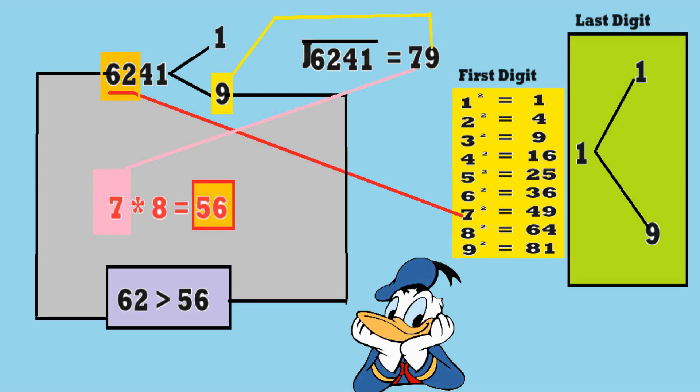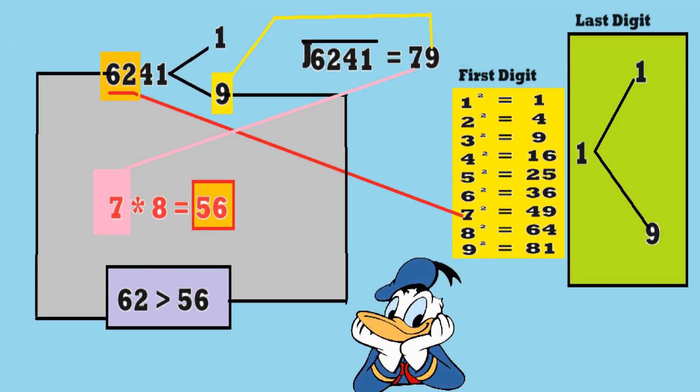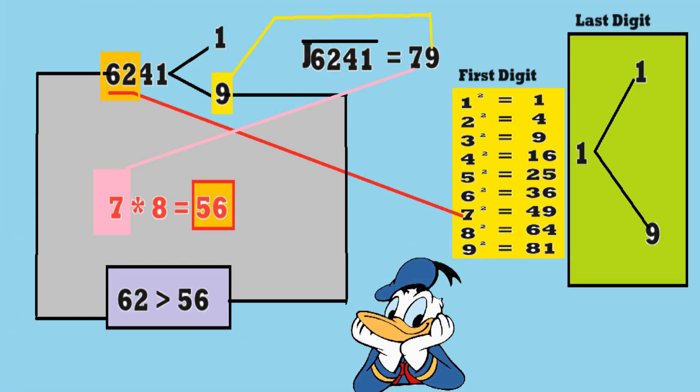For the square root of 6241: the number ends with 1, so the last digit will be either 1 or 9. Taking the first two digits — 62 — we see 62 is less than 8² (64) and greater than 7² (49), so the first digit is 7. Multiplying 7 by the next number 8 gives 56. Since 62 is greater than 56, the last digit is the greater number, 9. So the answer is 79.